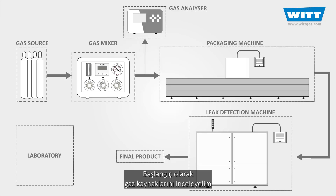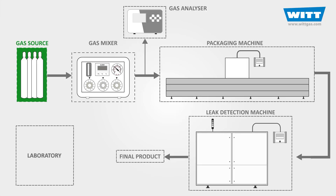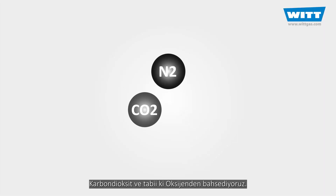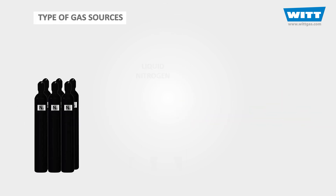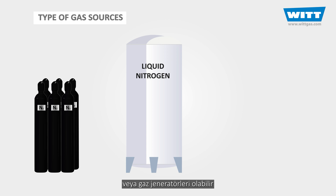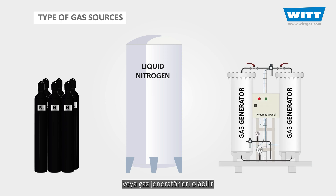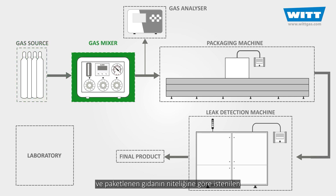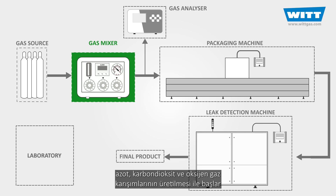At the very beginning, there are the gas sources. By gas, we mean nitrogen, carbon dioxide, and of course, oxygen. These gas sources can be in the form of cylinders, cryogenic tanks, or in some cases, gas generators. These gases get transferred into the gas mixer to create the desired mixture of nitrogen, carbon dioxide, and oxygen for different types of foods.